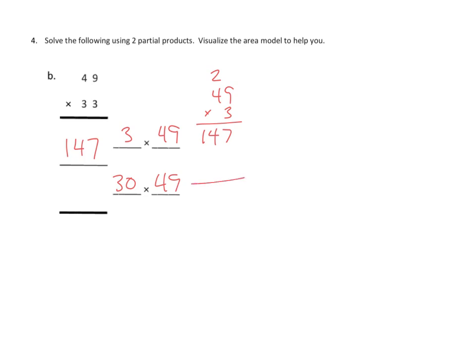And then we could take this problem and we could do this problem separately as well. We could do 49 times 30. We've got 3 times 7, that's 27. So 7 goes here and the 2 goes up there. 3 times 4 is 12 plus 2 more is 14. And so 30 times 49 is 1,470.